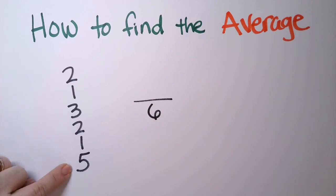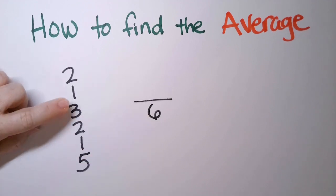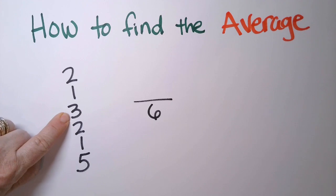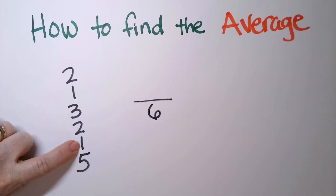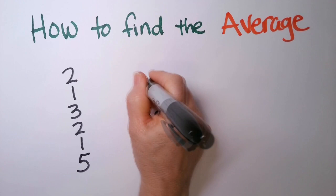So however many numbers you have, that goes on the bottom. And then we're going to sum them, and that goes on the top. So I have 2 plus 1, which is 3. Add another 3 to it at 6. 6, 7, 8, 9. 9 plus 5 is 14.